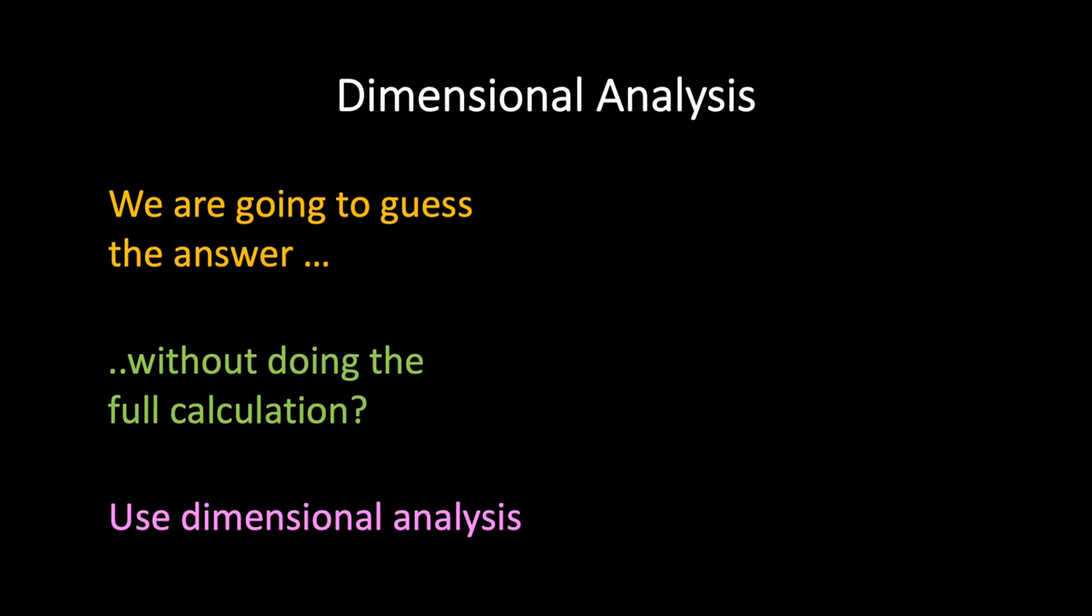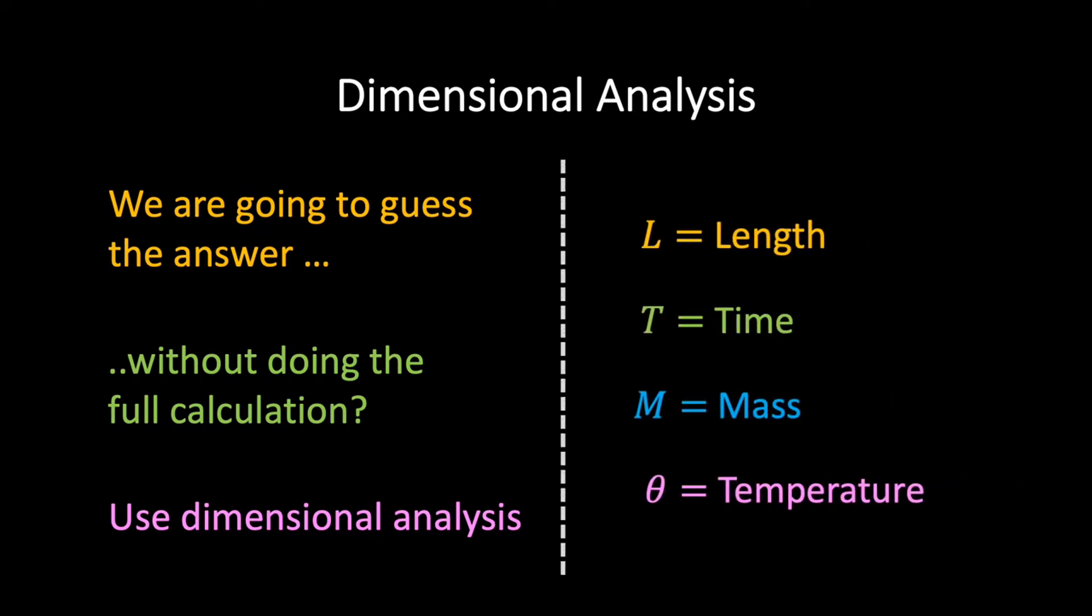The first thing to appreciate is that an equation in physics simply represents a relationship between physical properties, and a measurable physical property is referred to as a dimension. In what follows, we will focus on the basic dimensions of length, time, mass, and temperature, which we will signify with the letters L, T, M, and theta.